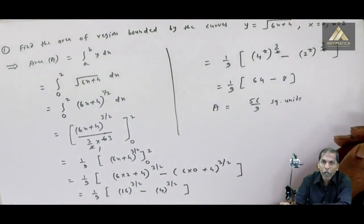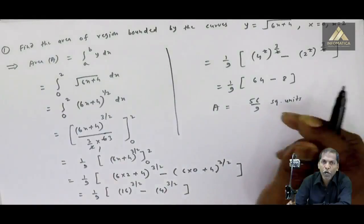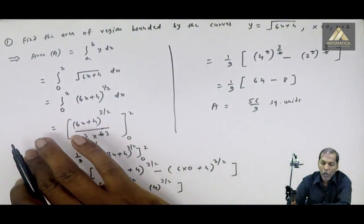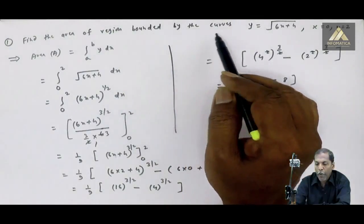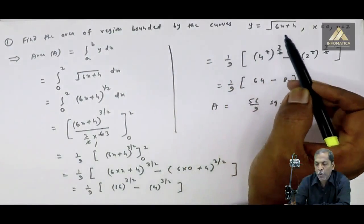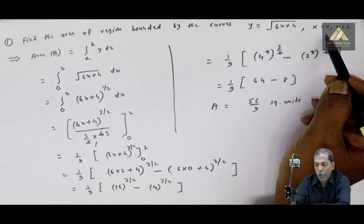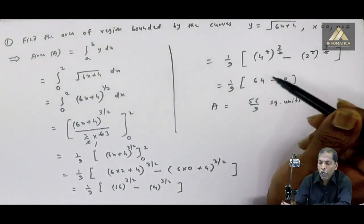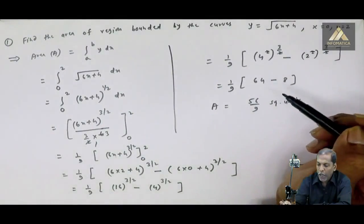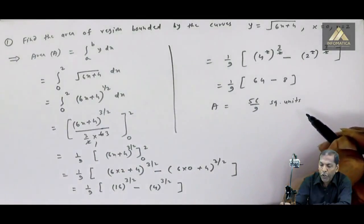और area के लिए square units लिखना जरूरी है. इसी तरह हमने area under the curve related question number 1 को solve कर दिया. Question था: find the area of region bounded by the curves y equal to square root of 6x plus 4, x equal to 0, x equal to 2. इस area का हमें answer मिला 56 upon 9 square units.